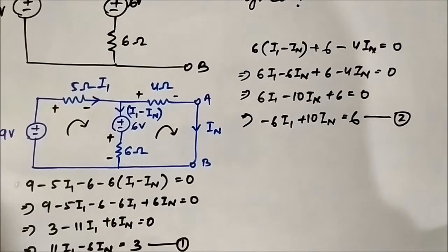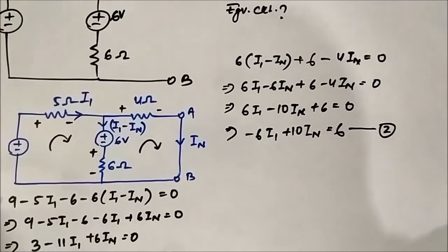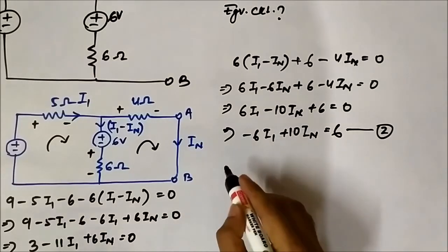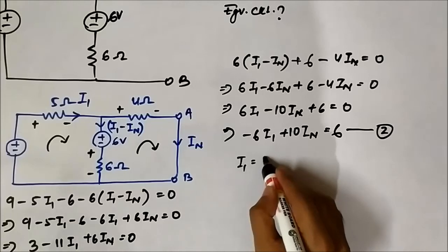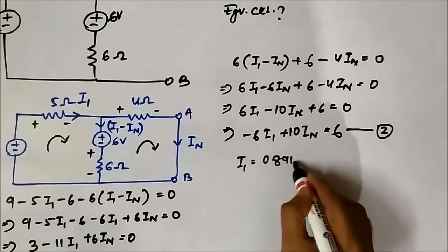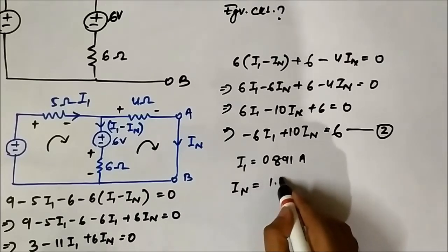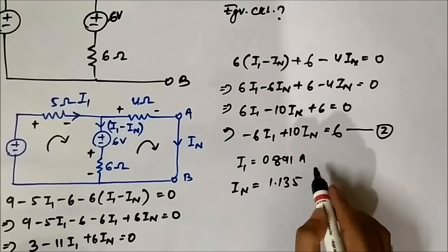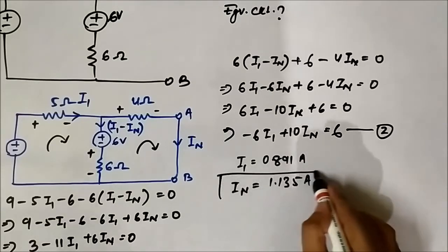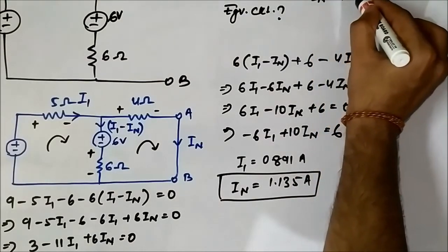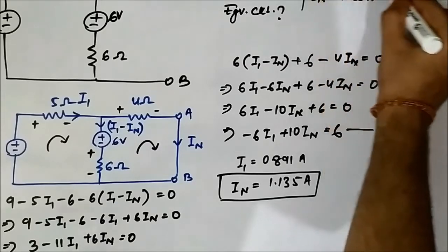We can solve it using variable cancellation method or if calculators are allowed, then we can put it in two equation format. I have already done that to save time. We get the value of I1 as 0.891 ampere and In, which is required in this case, as 1.135 ampere. So In is equal to 1.135 ampere.